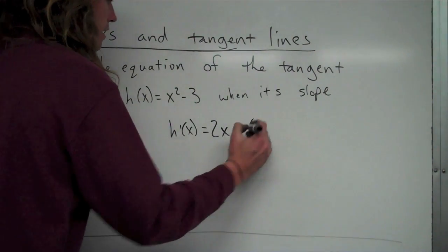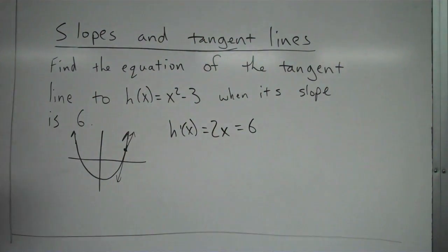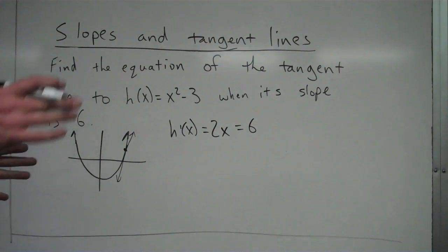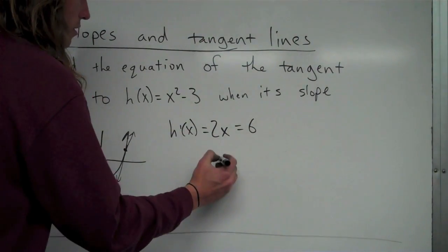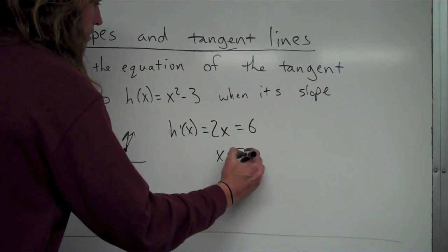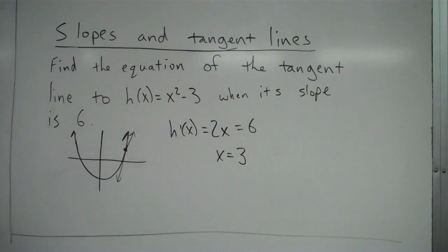Now I'm going to find when does that equal 6. So I'm setting it equal. I'm not plugging 6 in. I don't want to find the slope at x = 6. I want to find when does the slope equal 6. So I'm going to divide by 2 on both sides, and I'm getting x is equal to 3.